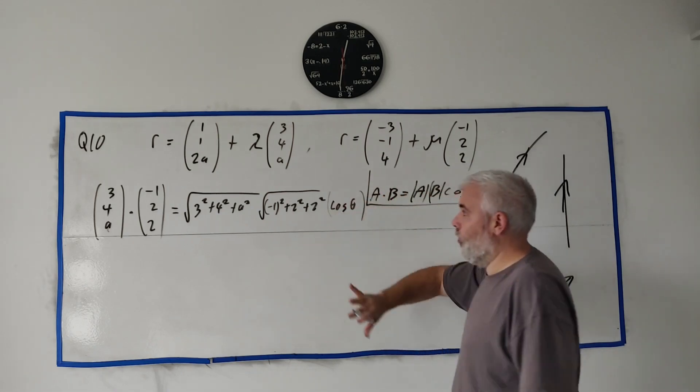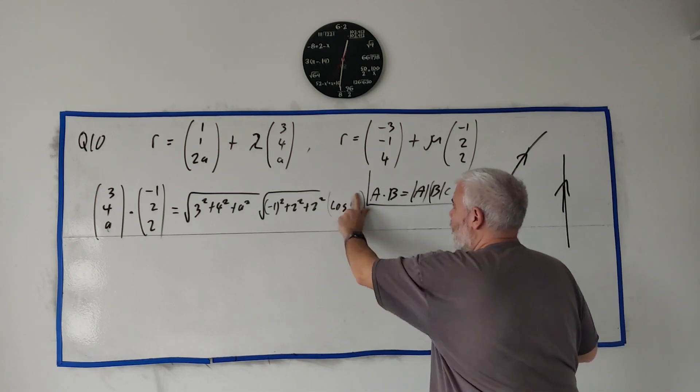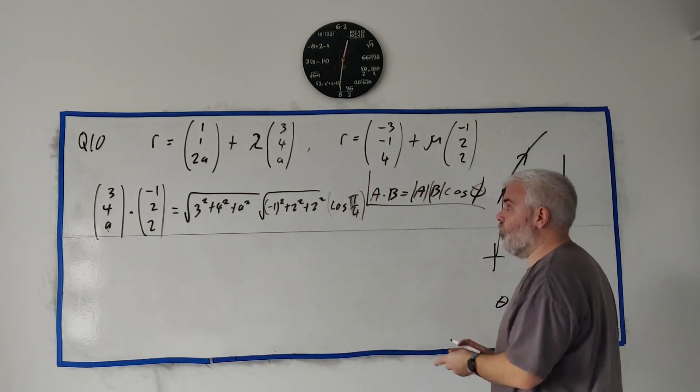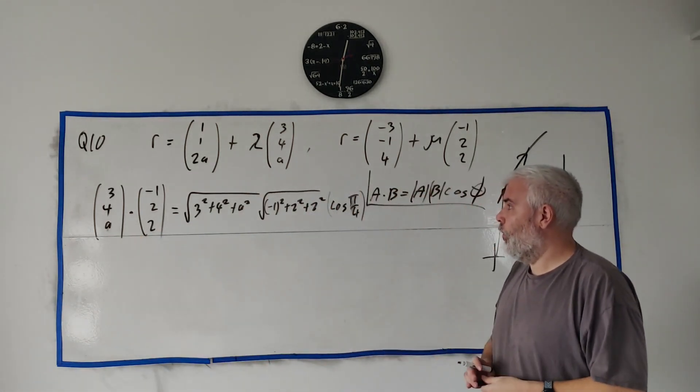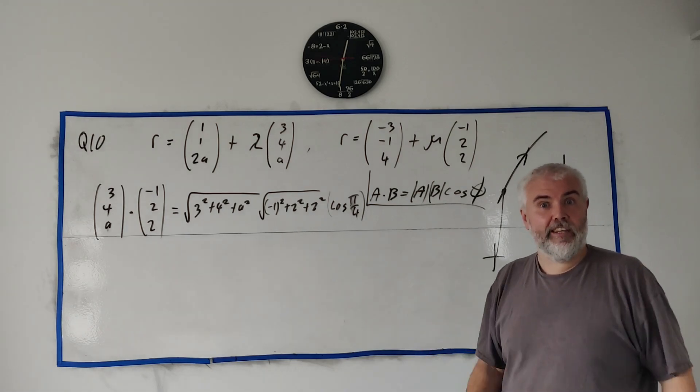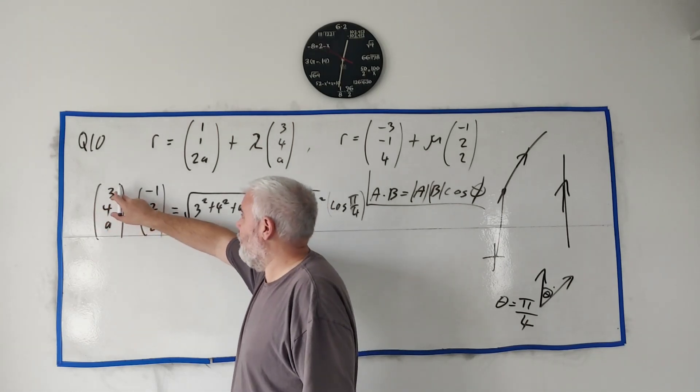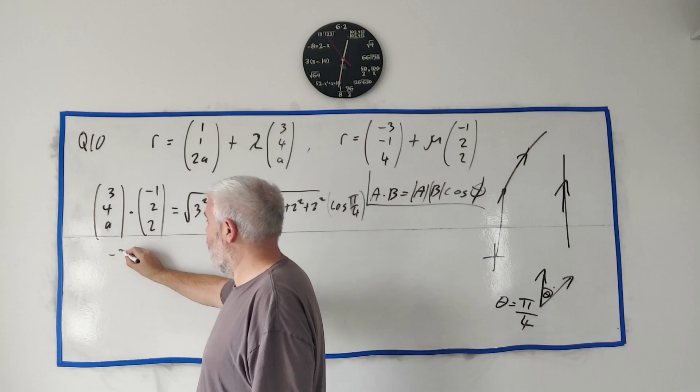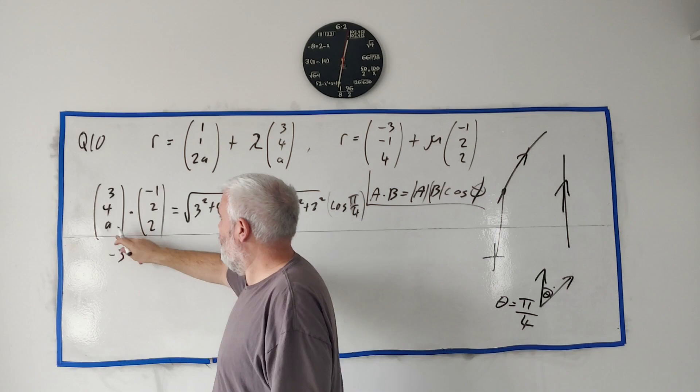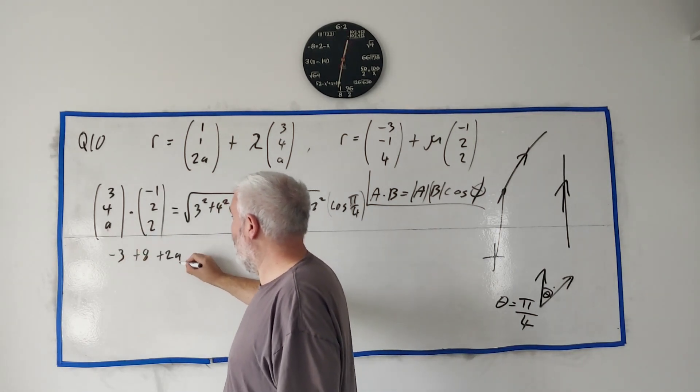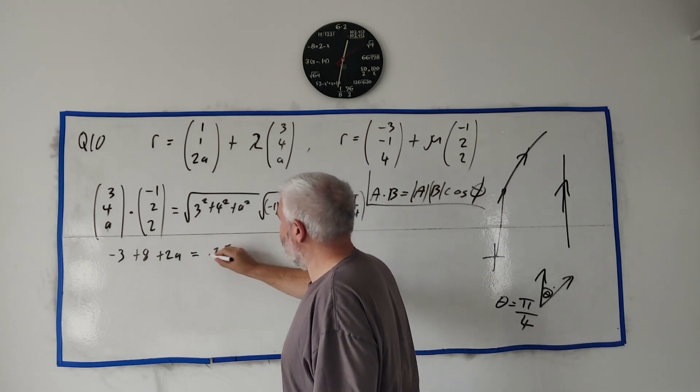These are all just numbers—we know the angle is π/4—so we can rearrange this and solve for a. Let's remember what the dot product says: top line by top line we get -3, then we add middle by middle we get 8, we add to that the bottom so that's 2a. That equals √(25 + a²) multiplied by—let's see, this is 4 + 4 + 1, that's 9, square root of 9—I could have wrote 3 there, and cosine π/4 comes out to √2/2.